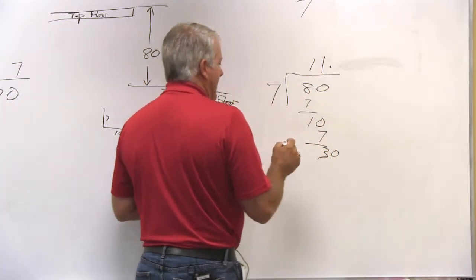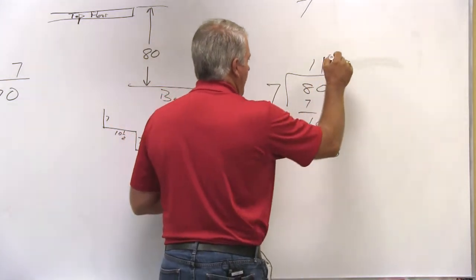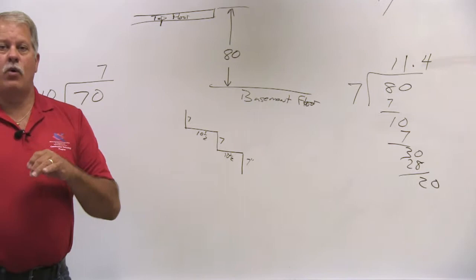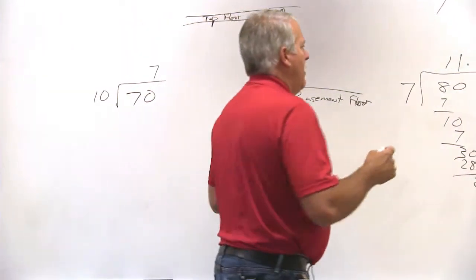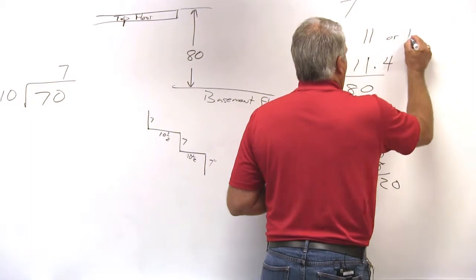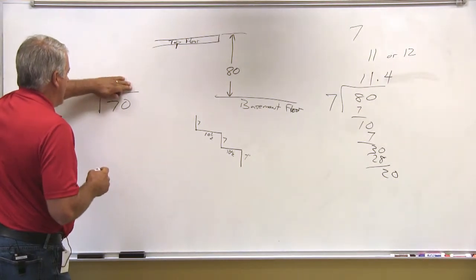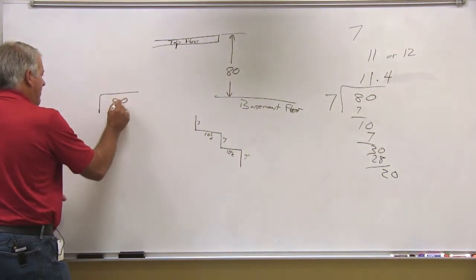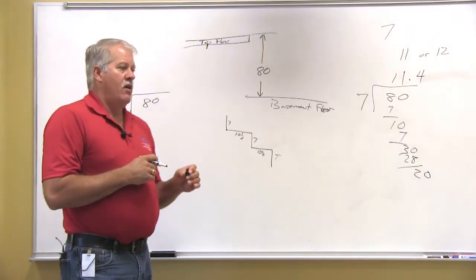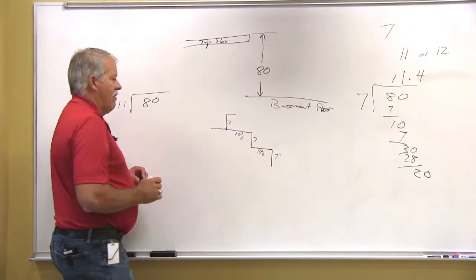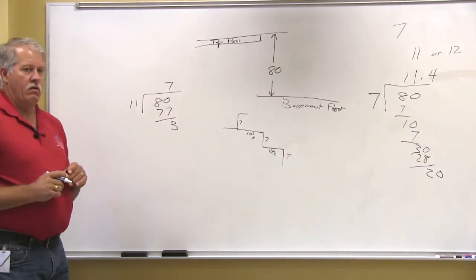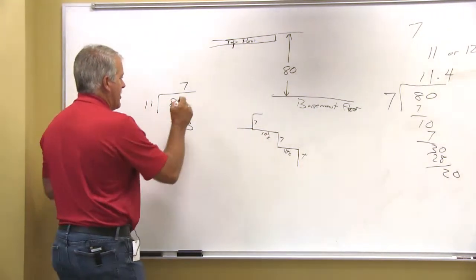So what we need to decide: 7 times 4 is 28, with 2 left over. So we have 11.4 as the particular dimension we need. This has to be a whole number, so we'll want to tell ourselves it's going to be 11 or 12. If we use 11 as the number, and we change this to 80 again, then we have to figure how many times that's going into there to get this distance right here. Well, 7 would be 77, with 3 left over.